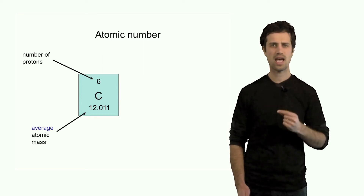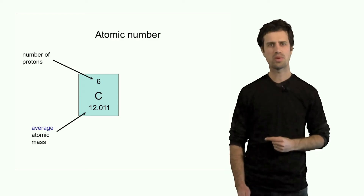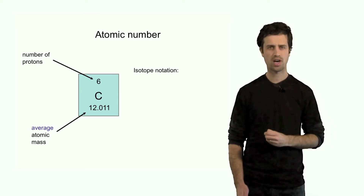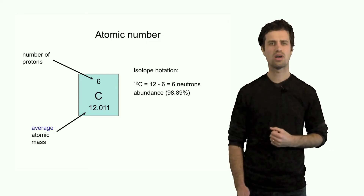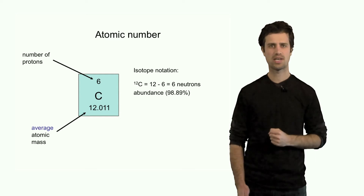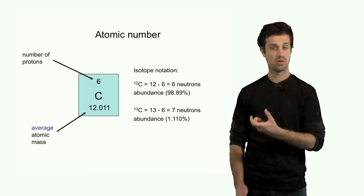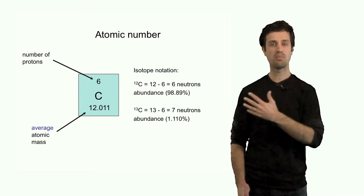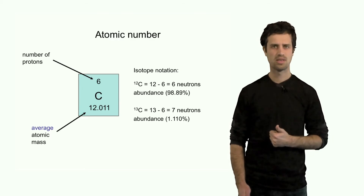There is a second number, which is the average atomic mass — in this case 12.01. How do we determine the average atomic mass? We saw that there are at least two isotopes of carbon. So in order to determine the average atomic mass, we need to know two things: the relative abundance and the relative masses.